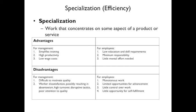For management, it's difficult to motivate quality. The person is just doing the same thing over and over, and they don't have the big picture — a small mistake can cascade down the line. Problems include worker dissatisfaction, more absenteeism, higher turnover, disruptive tactics, and poor attention to quality.